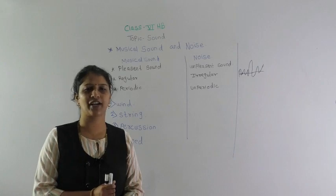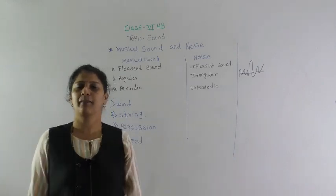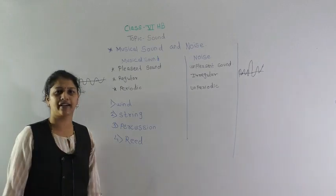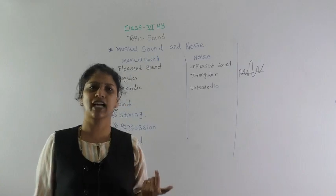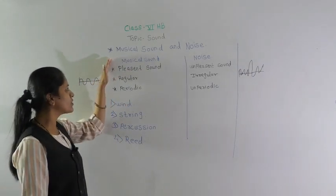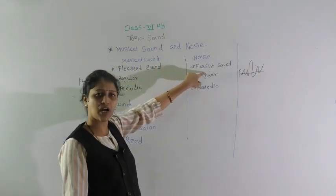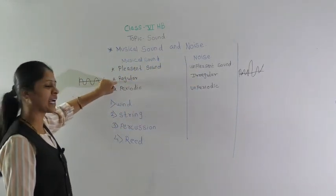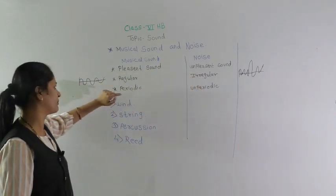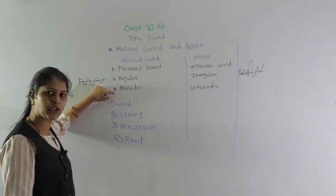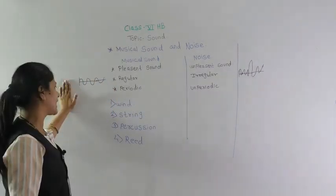Today we learned about musical sound and noise. Musical sound is a pleasant sound with a regular waveform and periodic vibrations. Noise is an unpleasant sound with an irregular waveform and unperiodic vibrations.